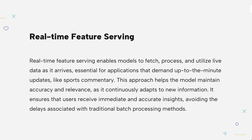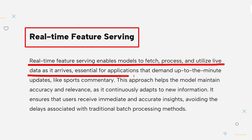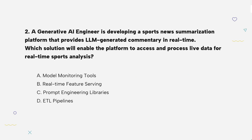The knowledge point of this question is real-time feature serving. Real-time feature serving allows the model to access and process live data instantly. This is crucial for providing up-to-date responses like sports commentary. It keeps information accurate and timely, giving users a real-time experience instead of delayed updates. Real-time feature serving lets the model access live data instantly — this is super important when you need up-to-date insights like during live sports events.